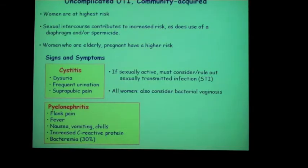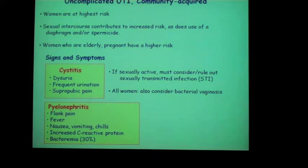Uncomplicated, or community-acquired UTI, most often occurs in women. Risk factors include sexual activity, use of birth control, and older or pregnant women. Cystitis presents with dysuria, which is low-volume urine, frequent urination, and suprapubic pain. If the person is sexually active, you should consider whether they have an STI, because many of these manifestations are similar to chlamydia or gonorrhea infections, which are infections of the urethra or cervix rather than the bladder.